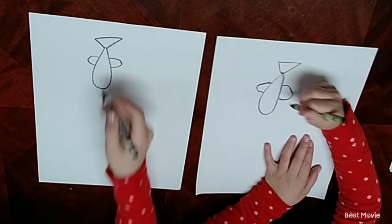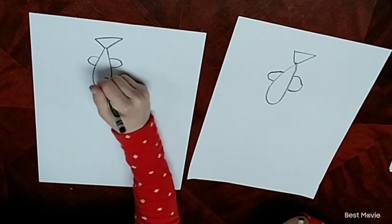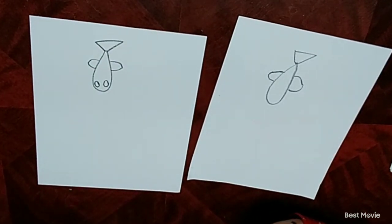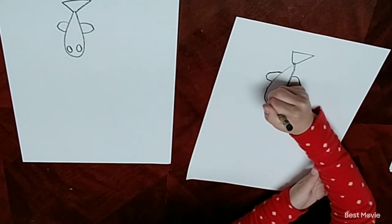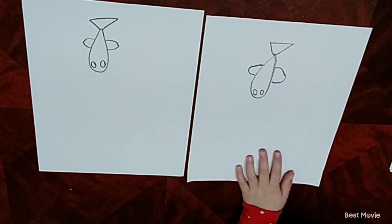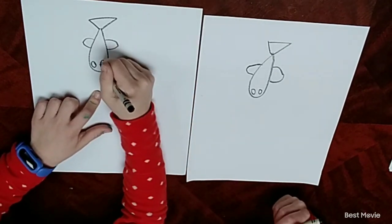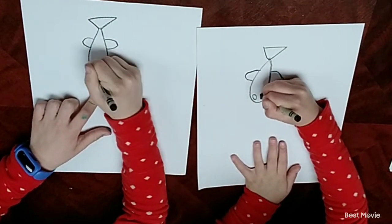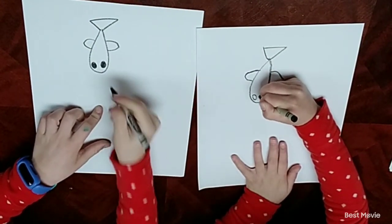Now let's draw its eyes. So we're going to draw two ovals here. Now after you draw the ovals you can color them in. Pause the video if you need more time.